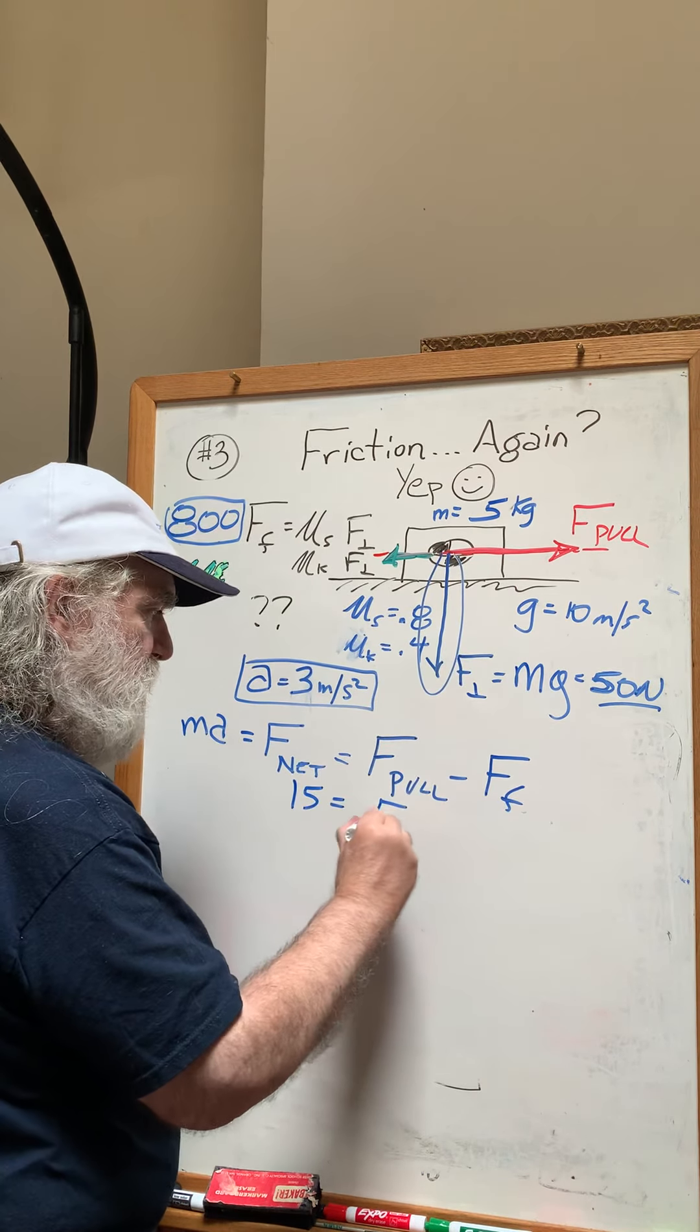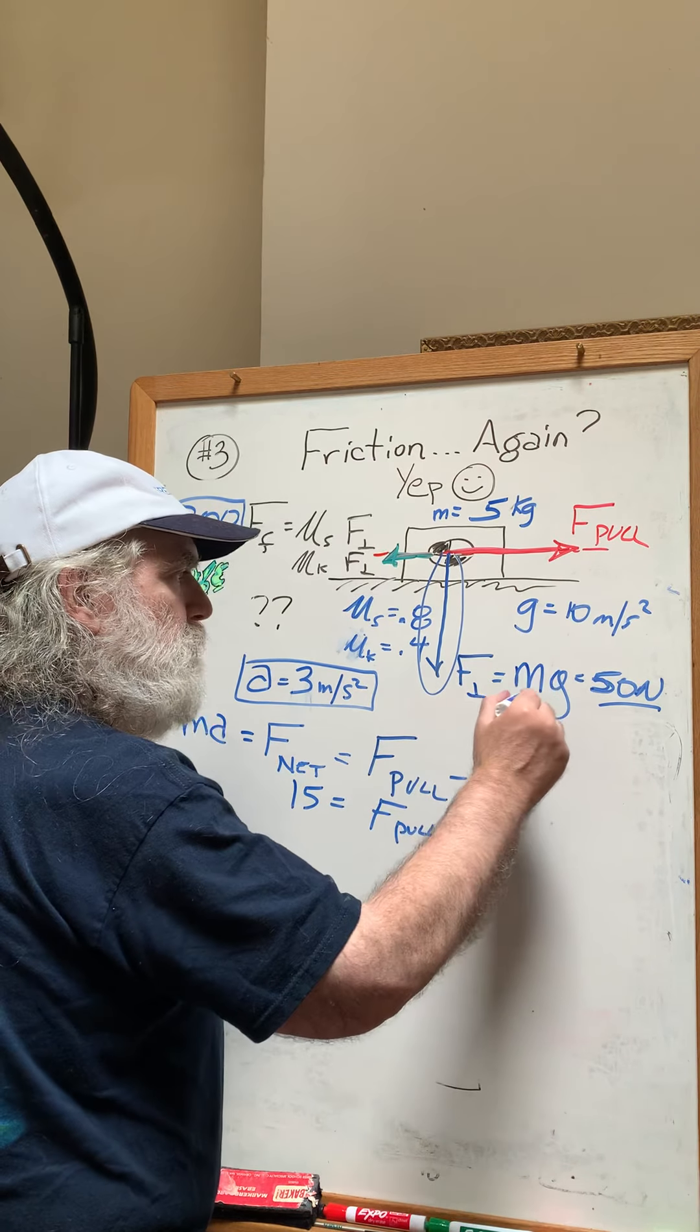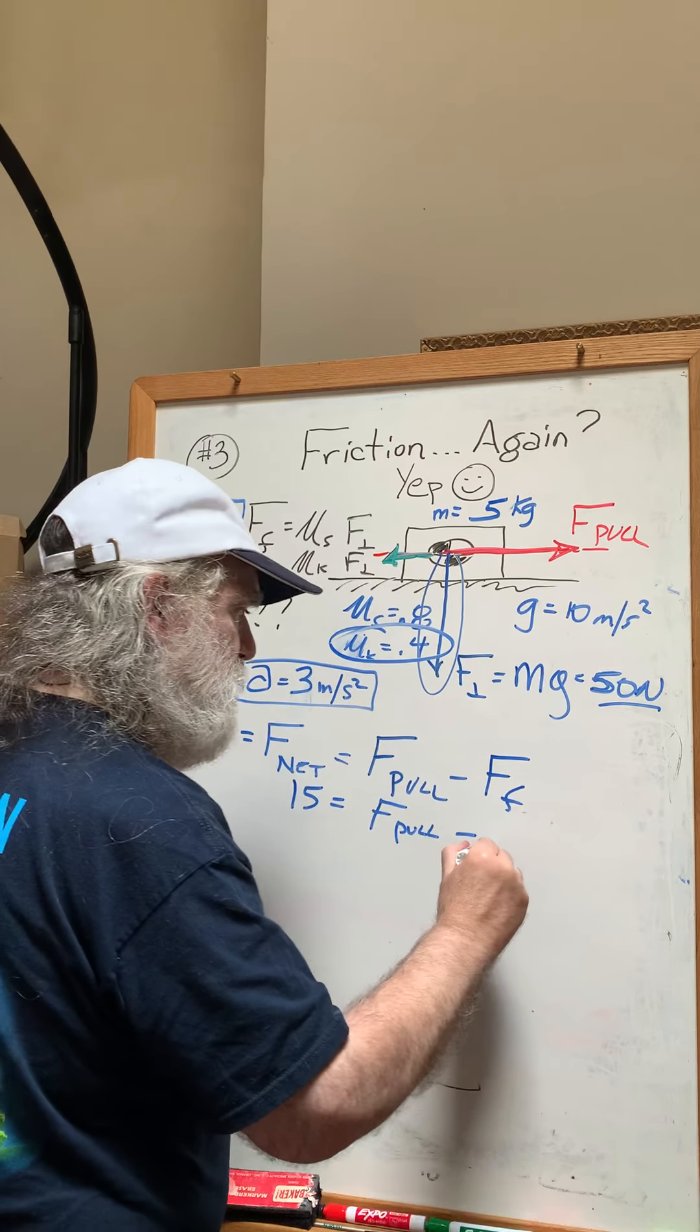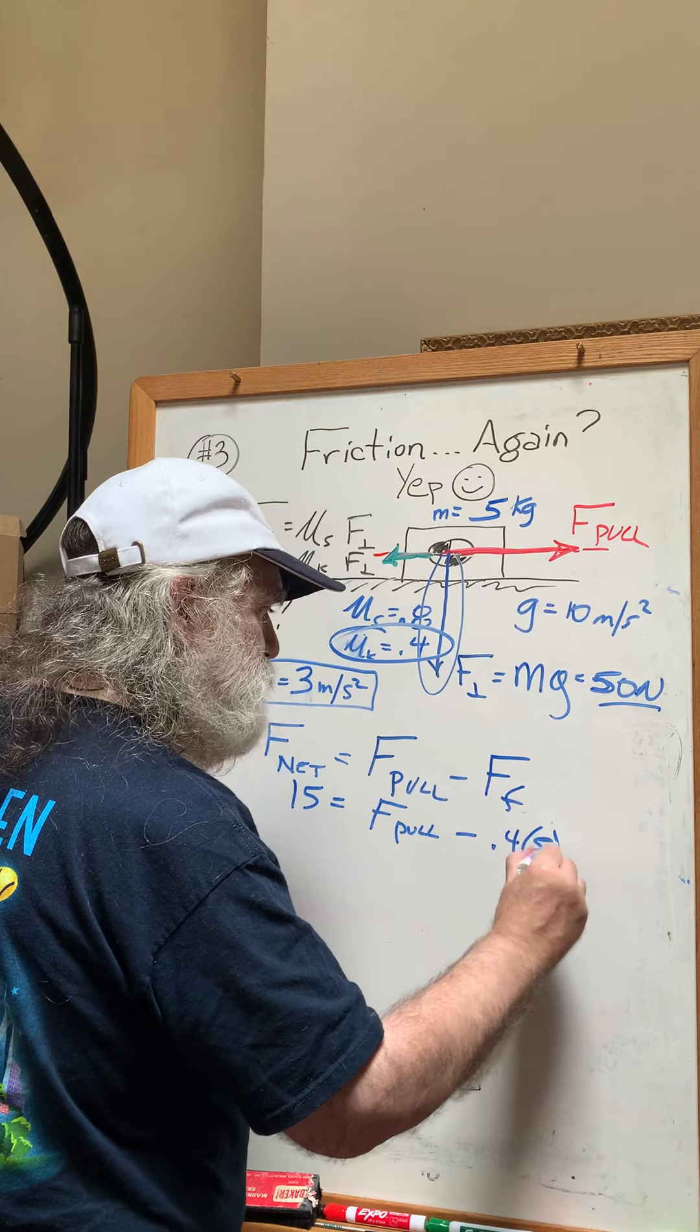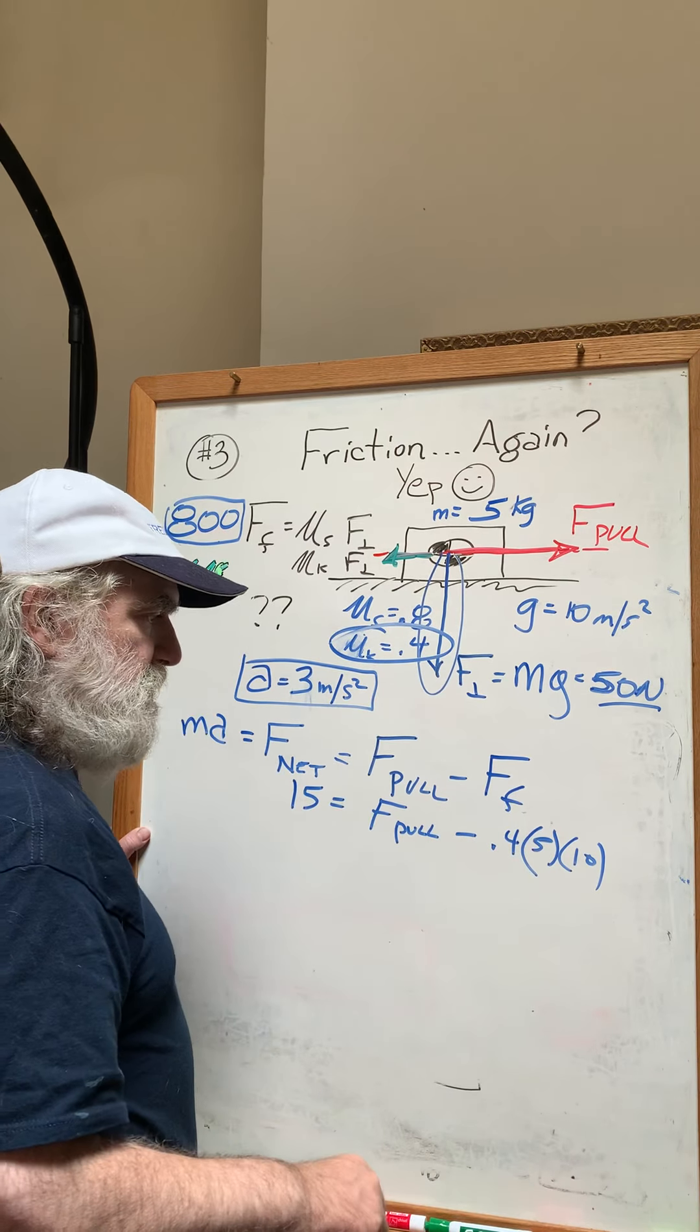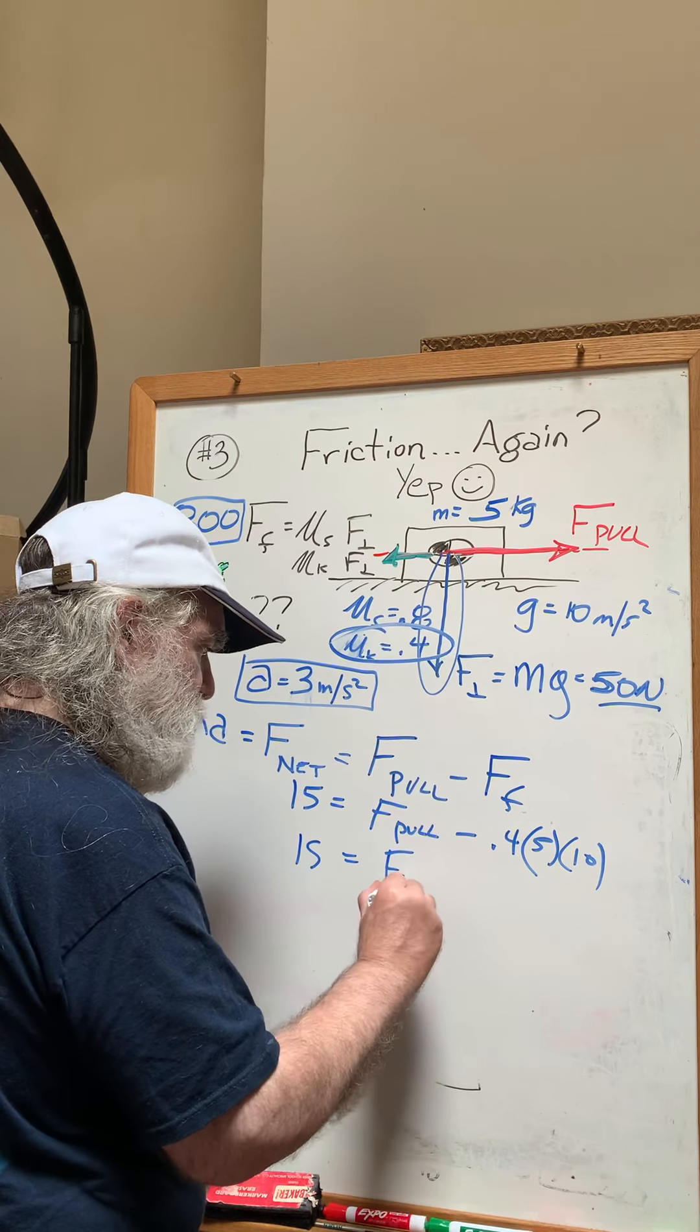That equals whatever I have to pull with, which I'm trying to find, minus the force of friction, which is mu kinetic times mg: 0.4 times m, which is 5, times g, which is 10. So 0.4 times 10 is 4 times 5 is 20, so 15 equals F pull minus 20.